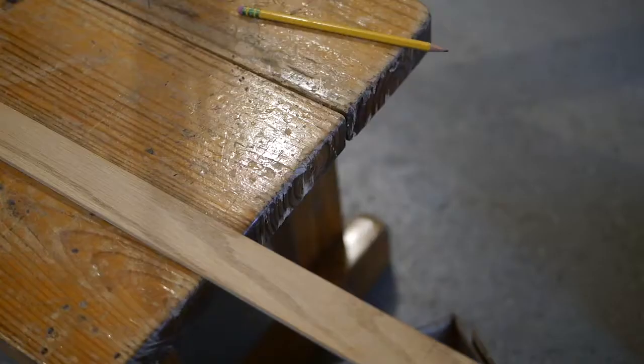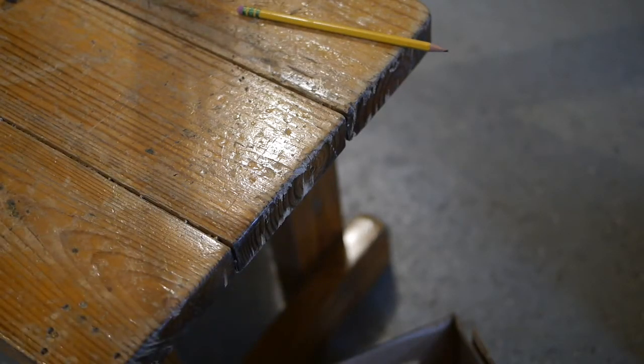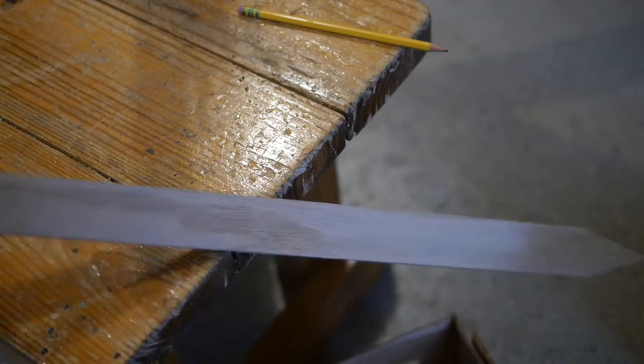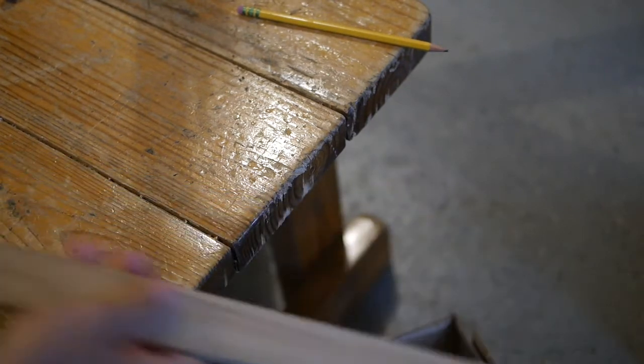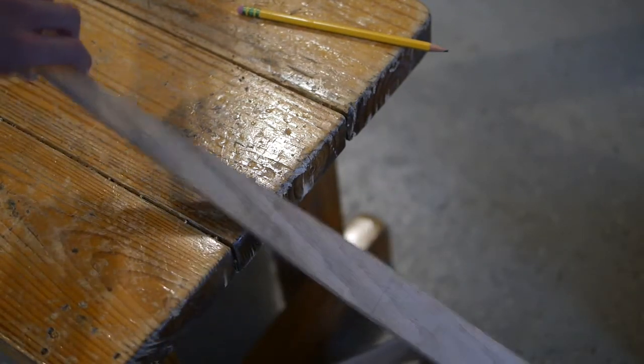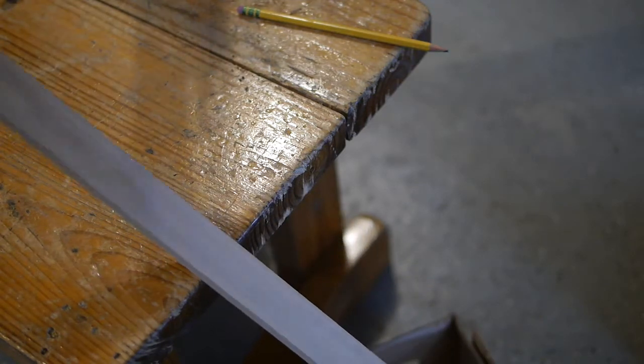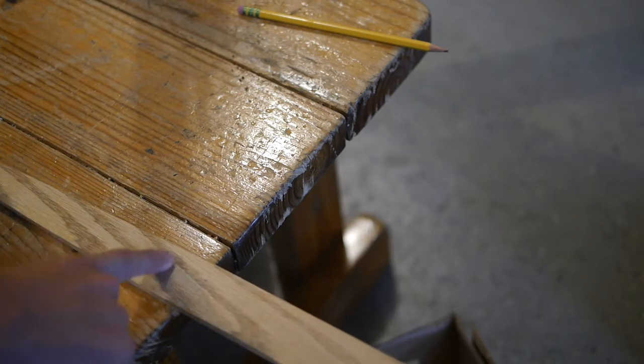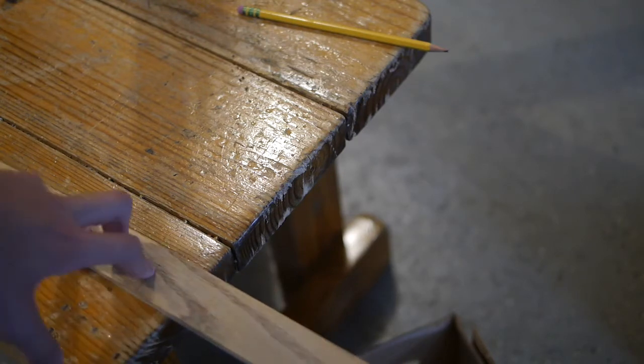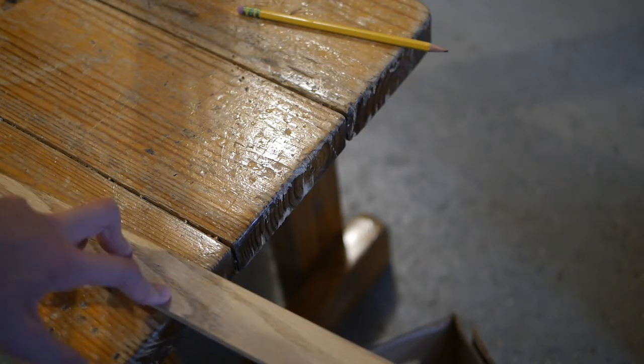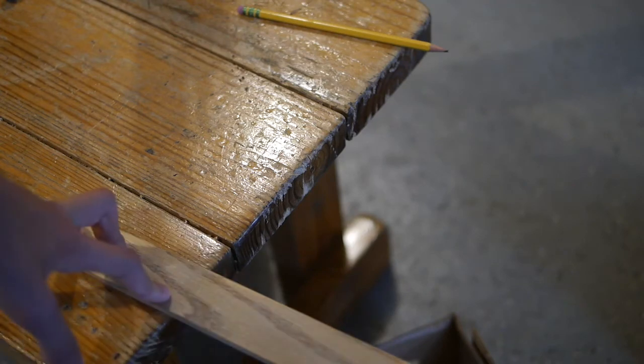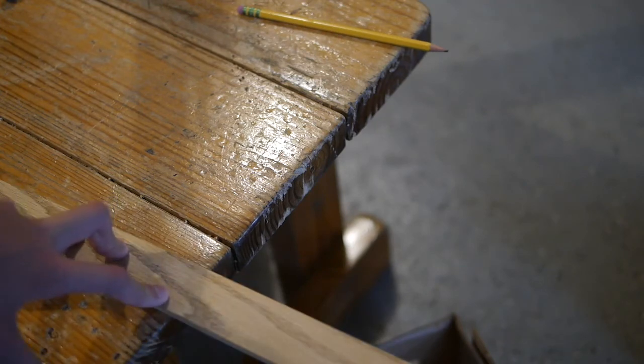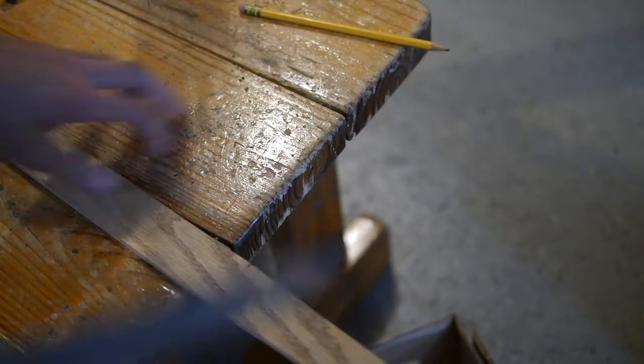Alright, never mind. We're making a claymore. So we got the blade all beautifully sharpened out. I got the point here. We got the failed handle right here. I did the measurements, and it turns out if I cut off this bit right here, it should be a perfect size for one of those basket-hilted claymores. Alright, so let's go.